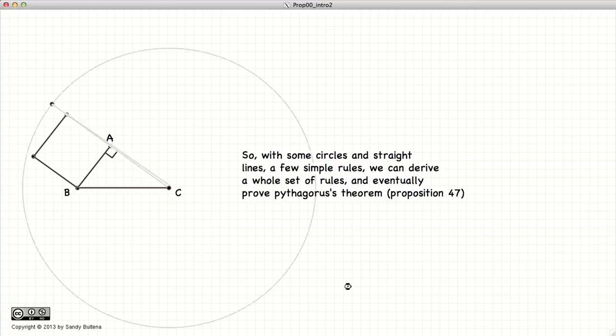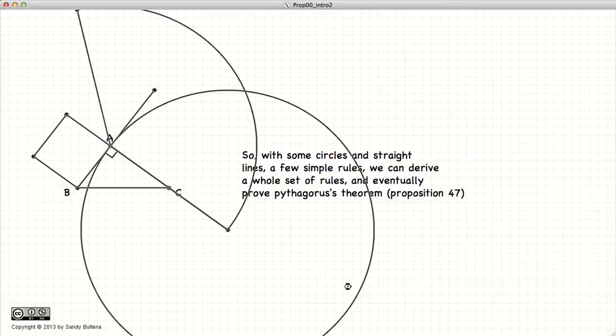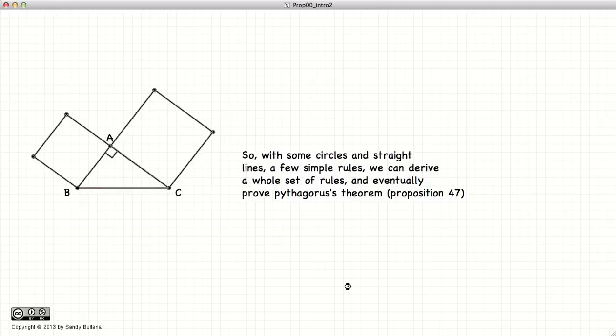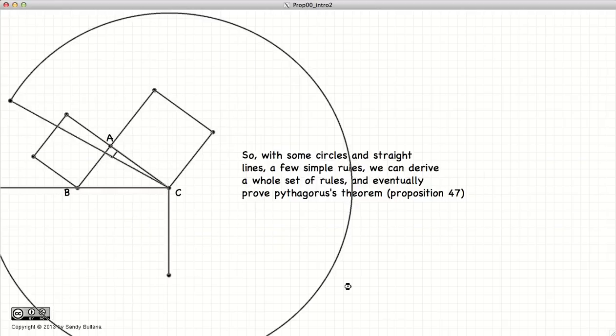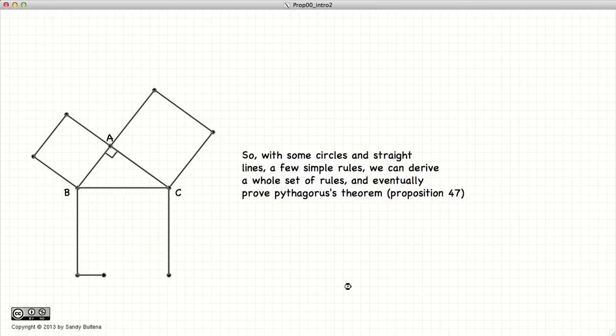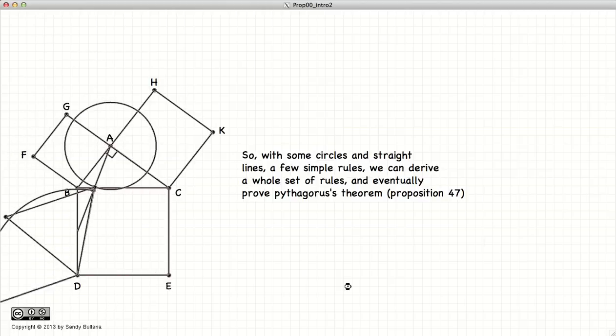So, with our postulates and common notions, a straight edge and a ruler, it is possible to derive Pythagoras' theorem, A squared plus B squared equals C squared, for a right-angled triangle. To be fair, Pythagoras derived his proof before Euclid. But Euclid is the first to derive it from basic principles. And this proof comes about as Proposition 47.